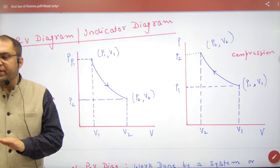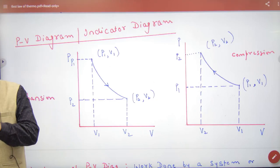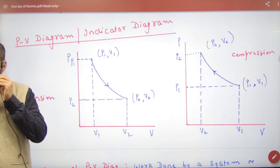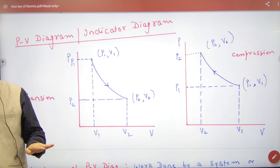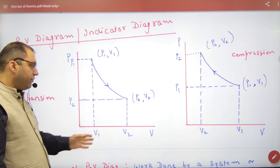PV Diagram or Indicator Diagram. What do we have done? PV Diagram is Pressure Volume graph, P and V.